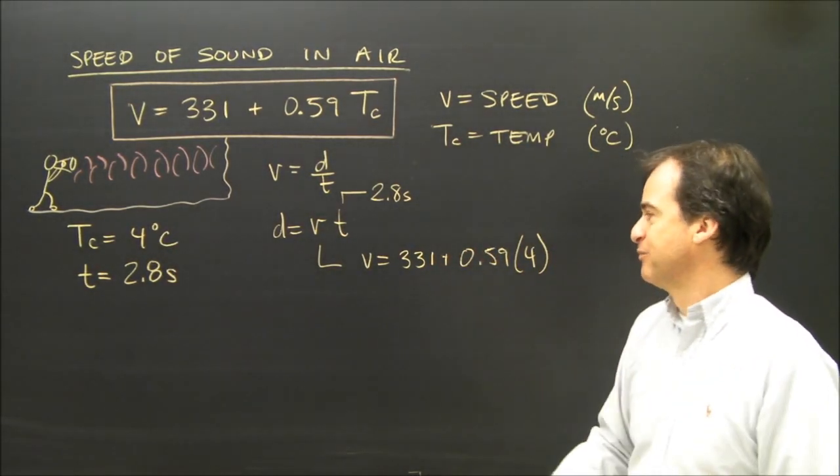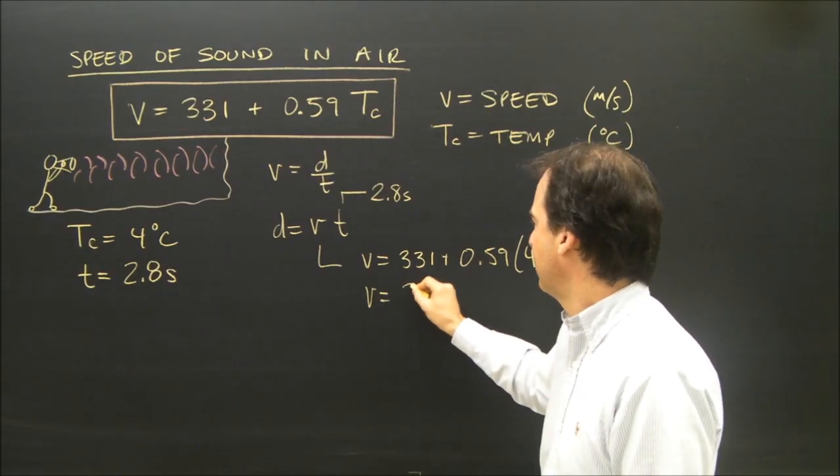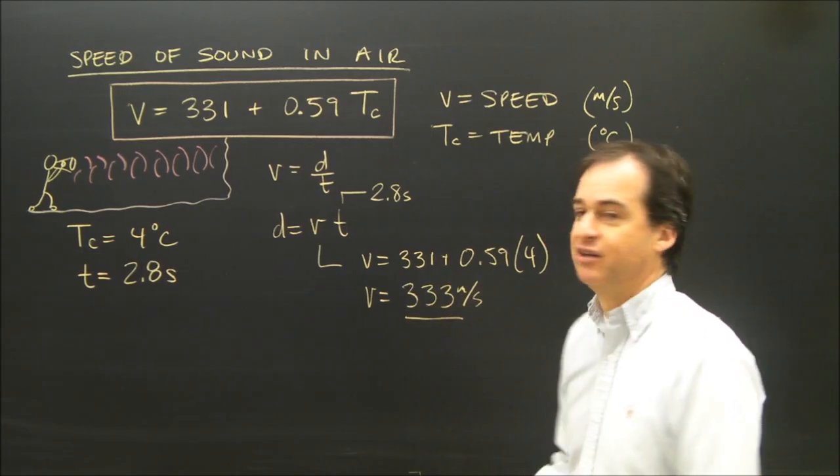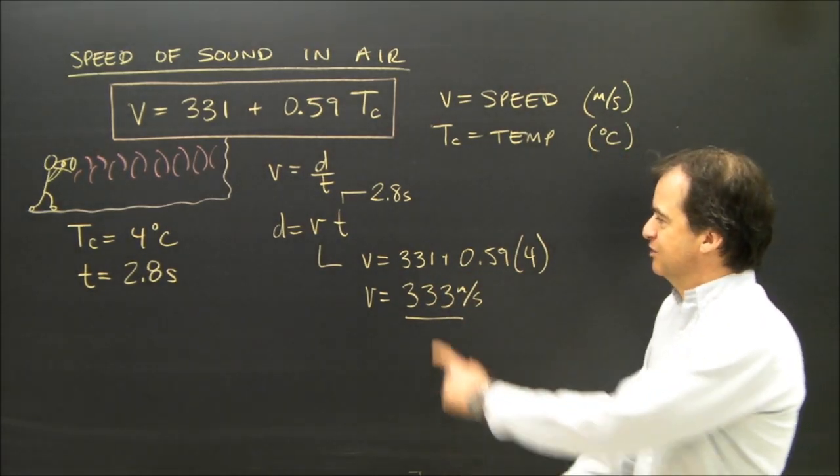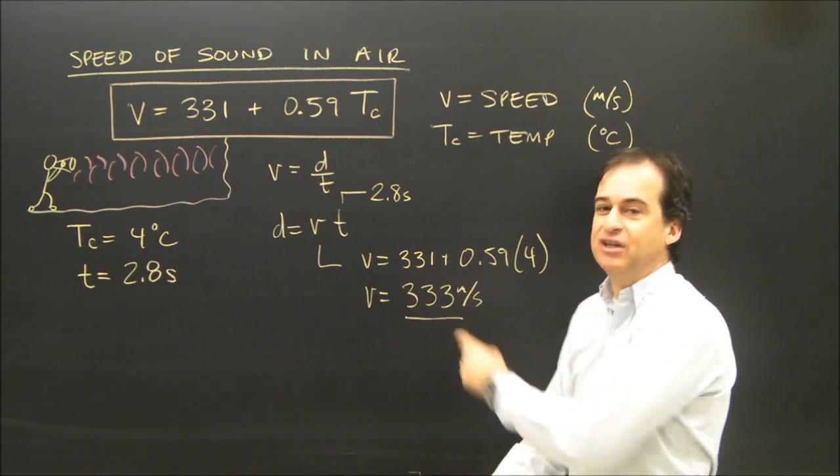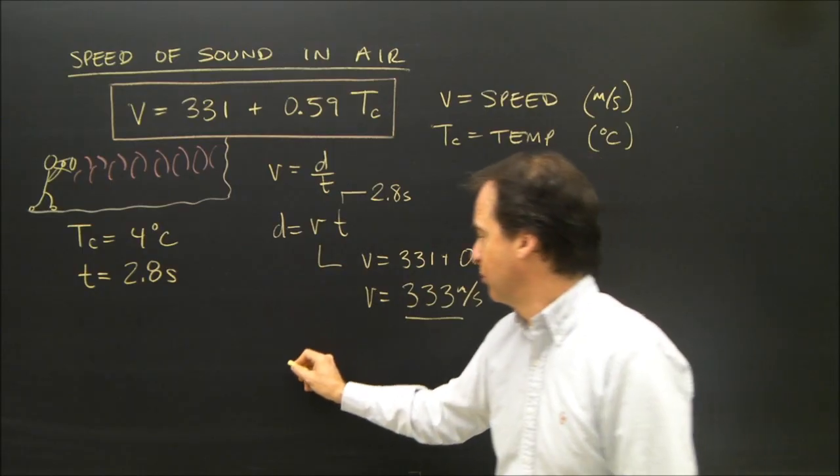So the waves were actually travelling at 333 metres per second. I rounded it off a little bit. So the temperature being 4 degrees made the waves travel a little faster, so they were travelling at 333 metres per second. Now I can plug into this formula.